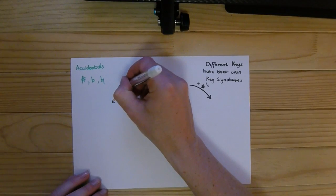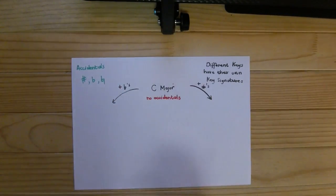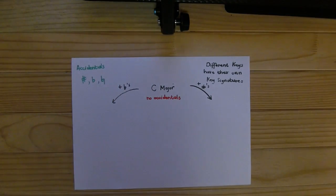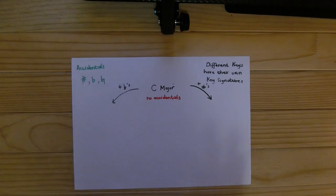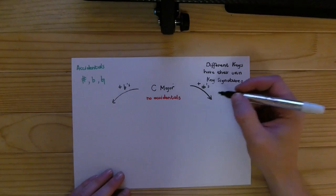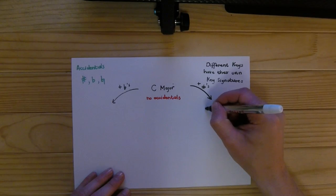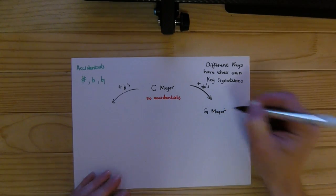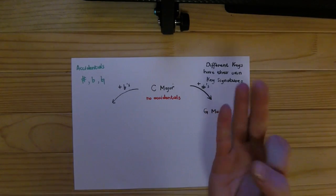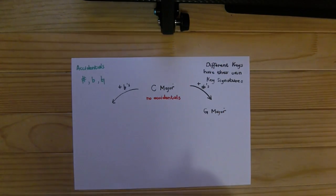The next key that we're going to get—if we count five steps up (but don't worry about the steps; the only thing we need to remember in Grade 1)—is G major. C, D, E, F, G—five steps. G major.